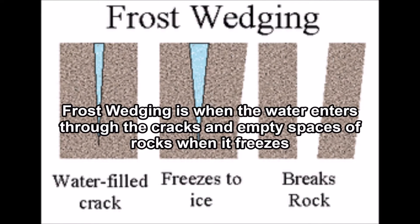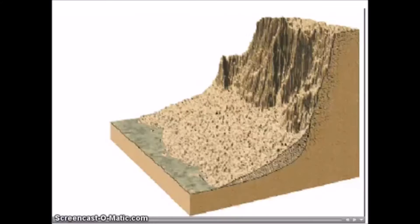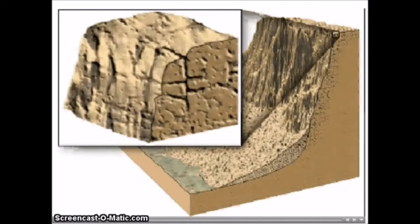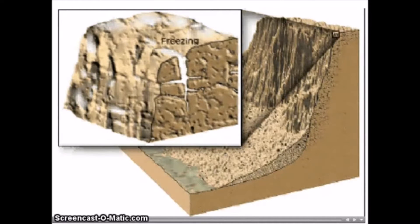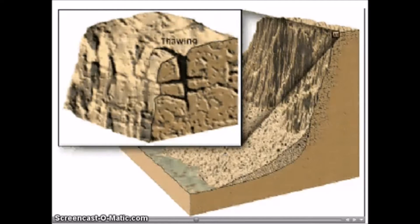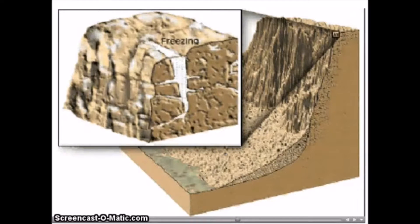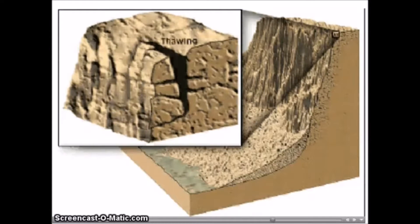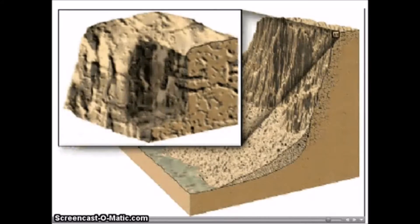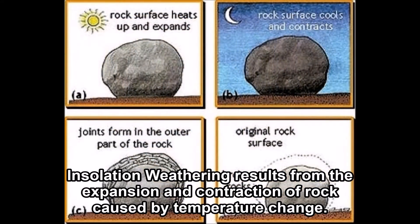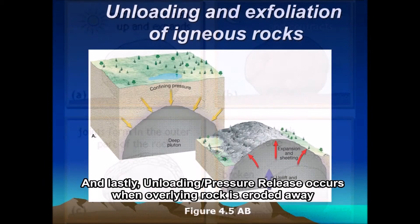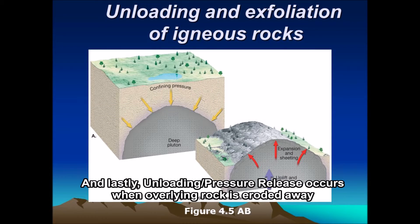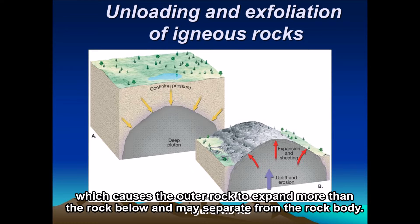Frost wedging is when water enters through the cracks and empty spaces of rocks and freezes. Unloading or pressure release occurs when an overlying rock is eroded away, which causes the outer rock to expand more than the rock below, being separated from the rock body.